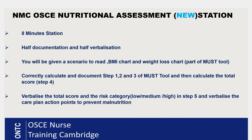Once you have completed the score, you need to say how you will manage and how you will prevent malnutrition for your patient. It's half and half — half is the written documentation and half is the verbalization. You need to correctly calculate the score in steps 1, 2, and 3 of the MUST tool, total the score in step 4, and in step 5 verbalize your total score, the risk category, and the care plan action points to prevent malnutrition.